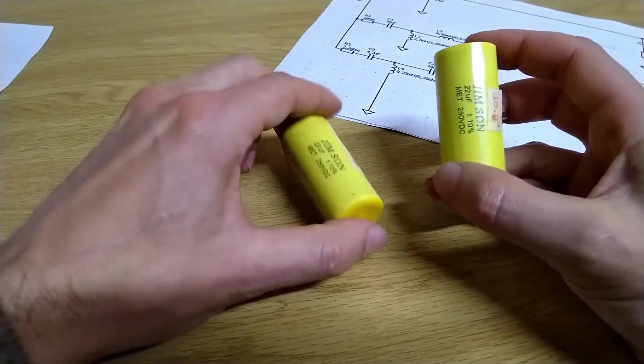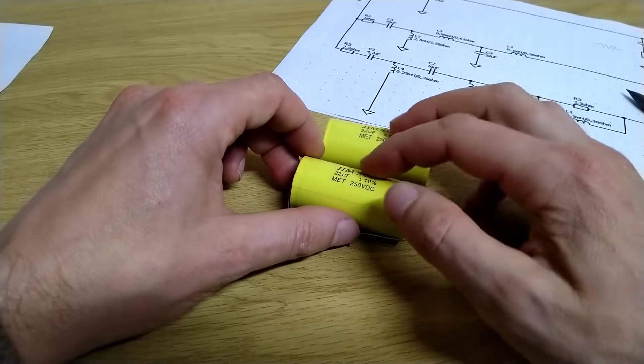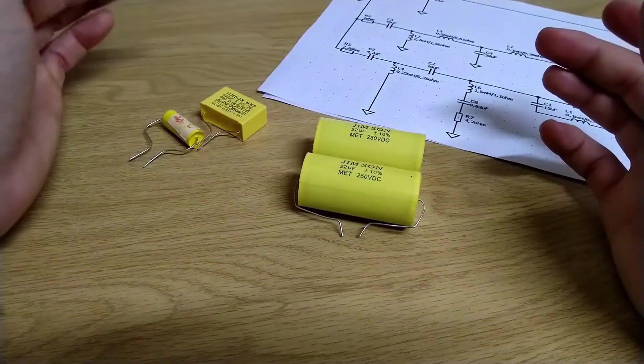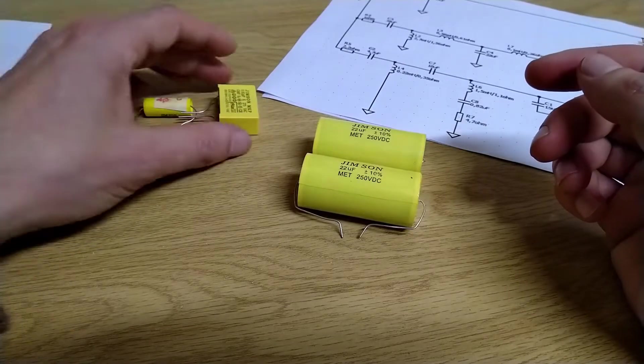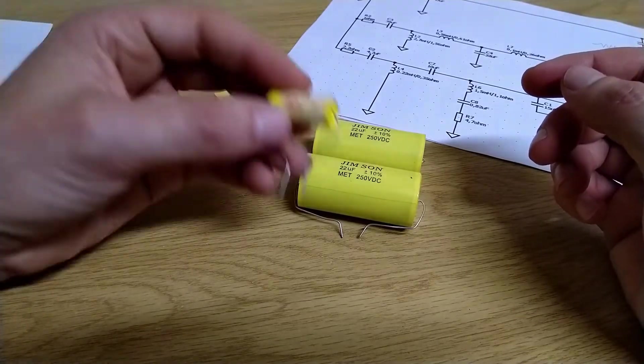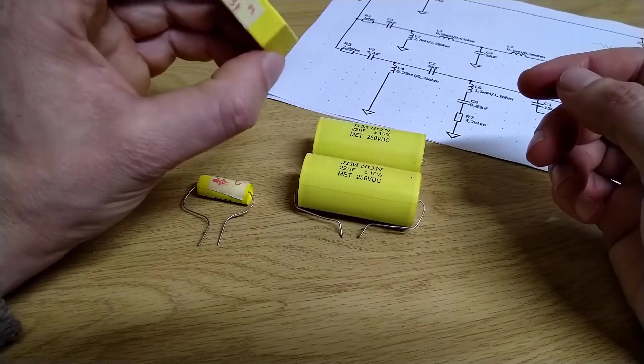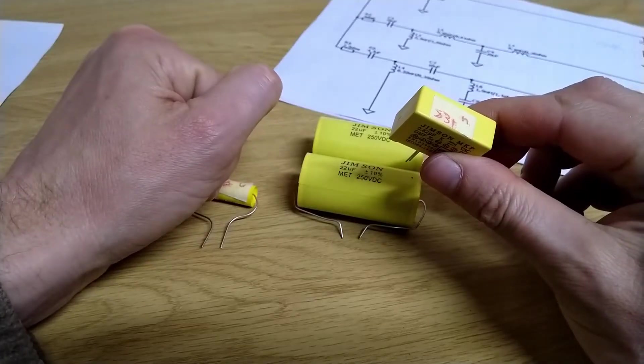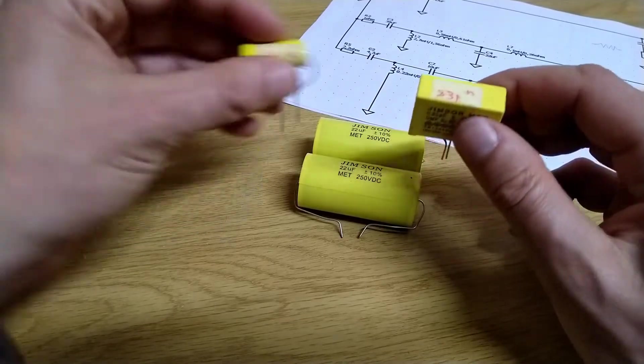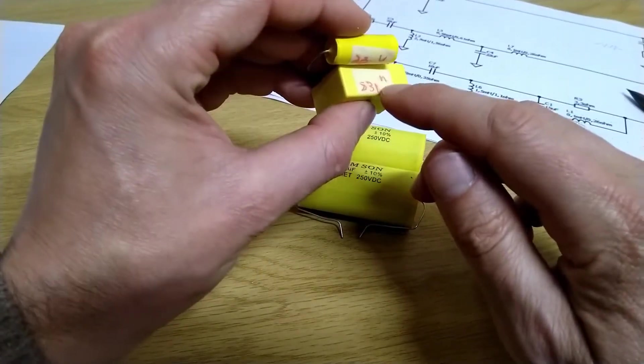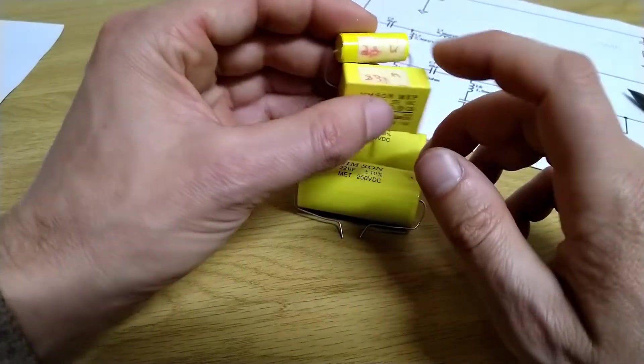That's not a 47 microfarad, so what I need to do is take these and put them in parallel. These are 22s, so two times 22 is 44, we're getting closer. Then we add another two, now we're at 46. If we add one of these, 2.2 plus 0.8 - that's 830 nanofarads which is 0.8 microfarads - together that's three, together that's 44, so there we go: 47.